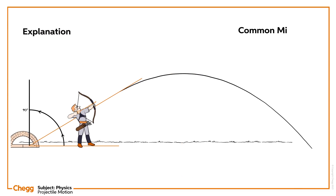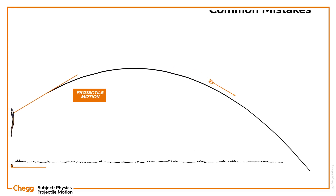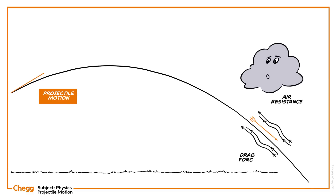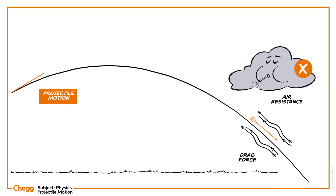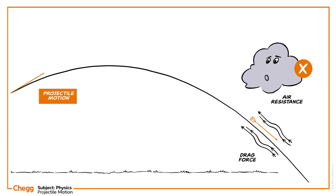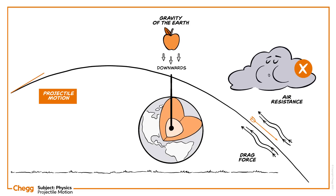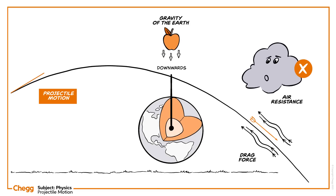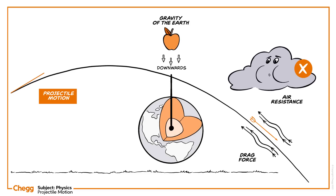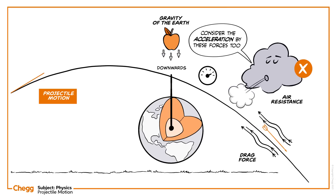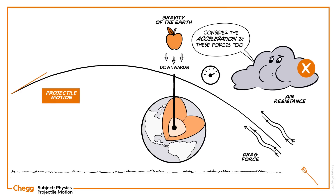We usually study projectile motion in the absence of air resistance or drag force. This means the only force involved in the study of projectile motion is the force due to the gravity of the Earth. But when drag force or air resistance is involved, it is necessary to consider the acceleration produced by these forces too.